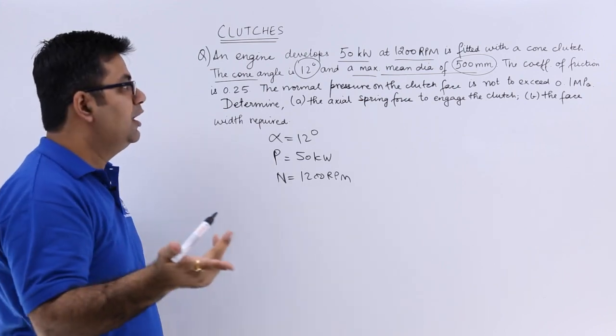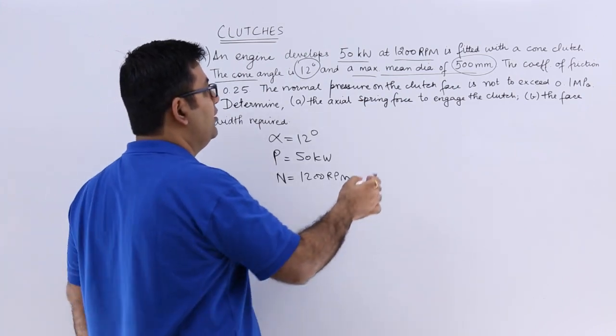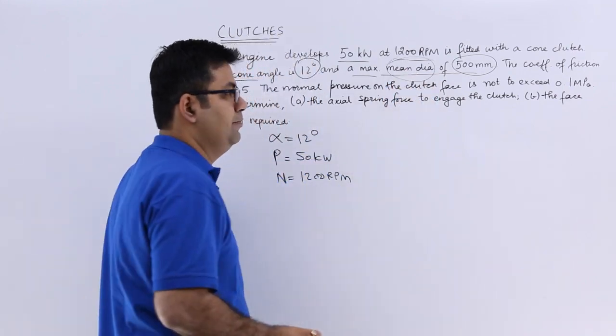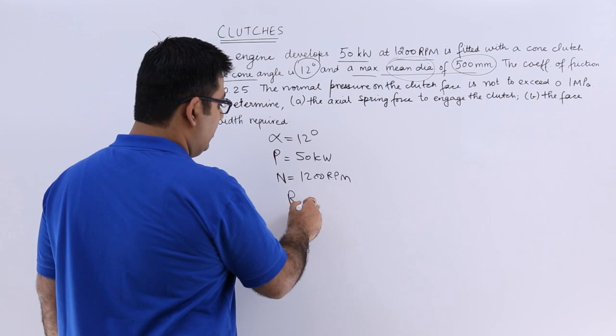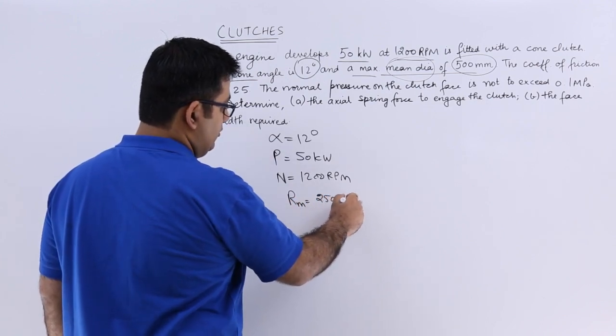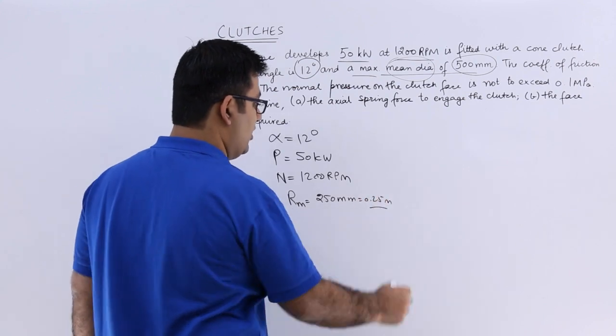So there is no need to think whether it is uniform pressure or uniform wear because we have been already given the mean diameter. So the mean radius would be 250 mm, that's 0.25 meters.